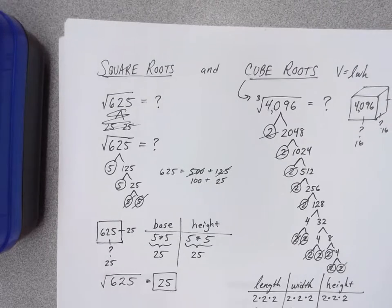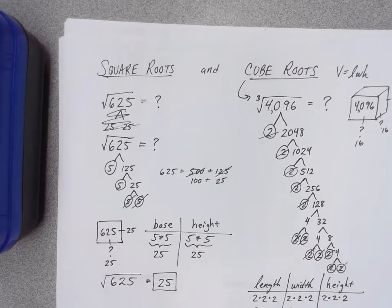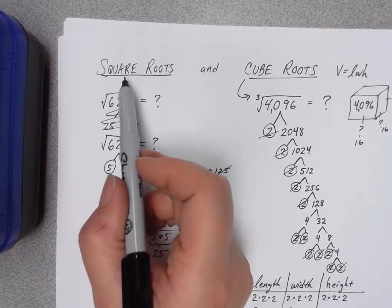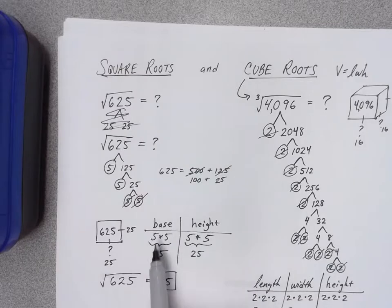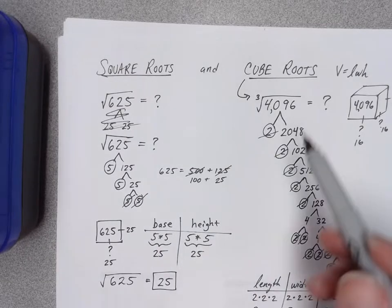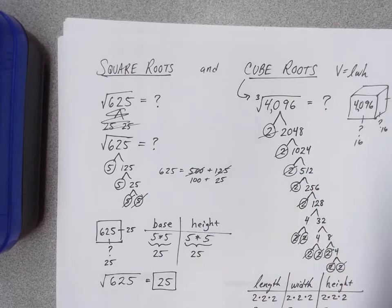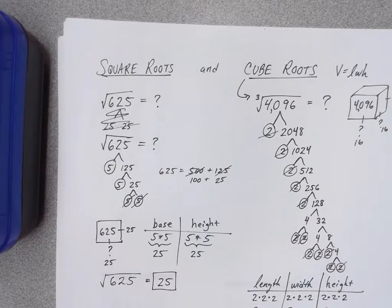To summarize: when looking at square roots and cube roots, you want to build factor trees first, then break them into groups. For square roots — two dimensions — break into two groups: a base and a height. For cube roots — three dimensions — break into three groups: length, width, and height.